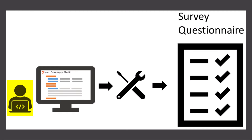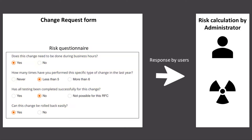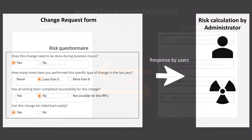An application developer can create a survey questionnaire in Developer Studio. An administrator can then use the questionnaire to conduct any type of survey and to make a decision based on the responses received. For example, on the change request form in PWA, you can display the questions that are relevant to the risks involved with a change request. Users can respond to those questions, and depending on their answers, you can calculate the risks associated with that change request.